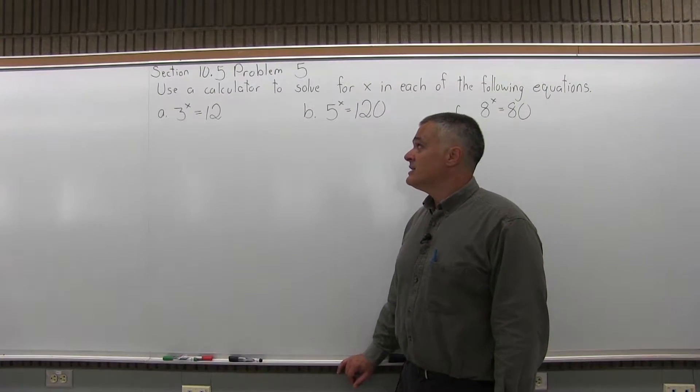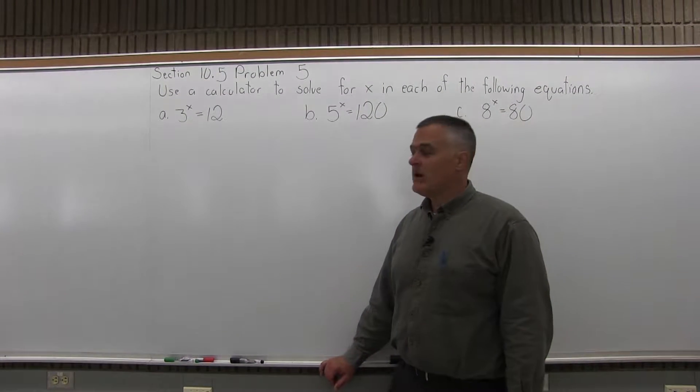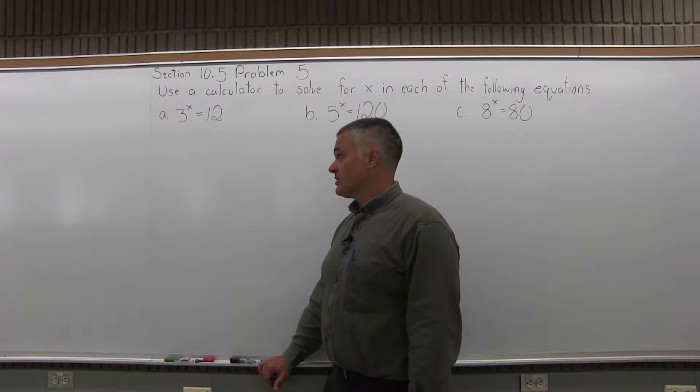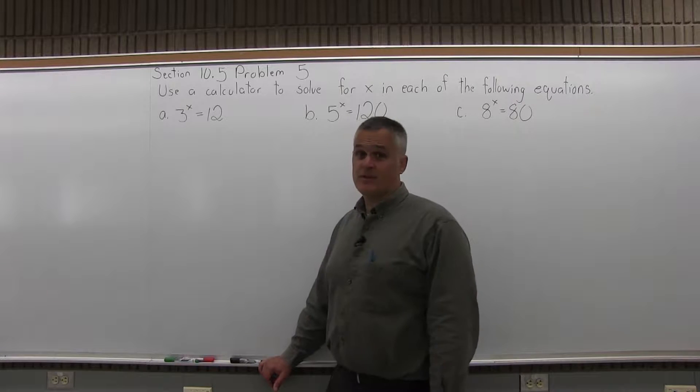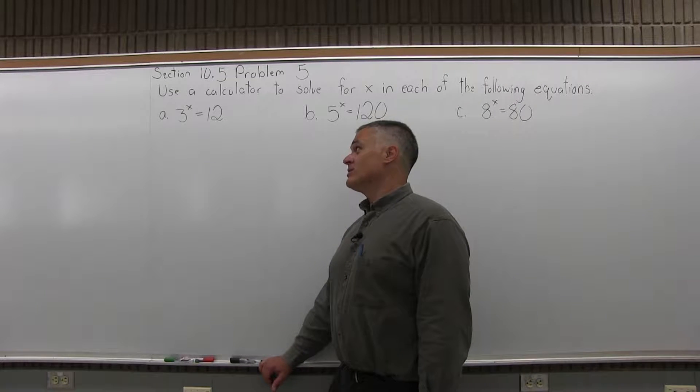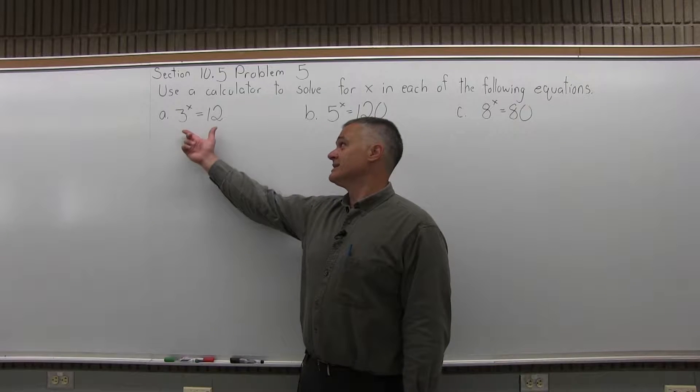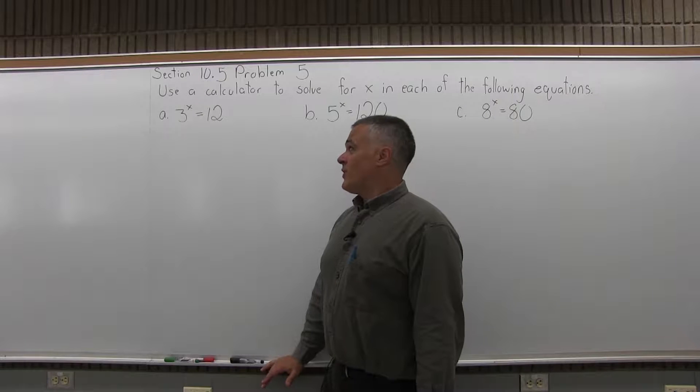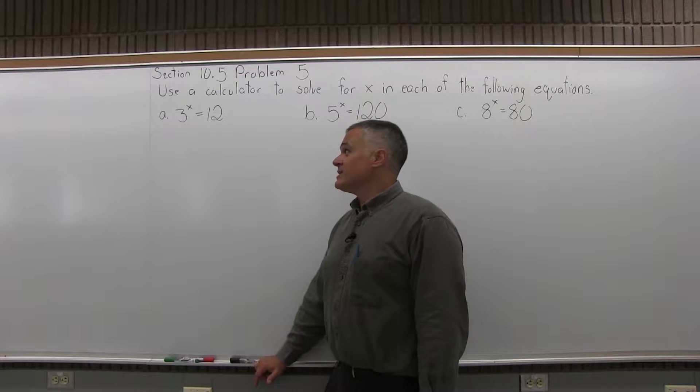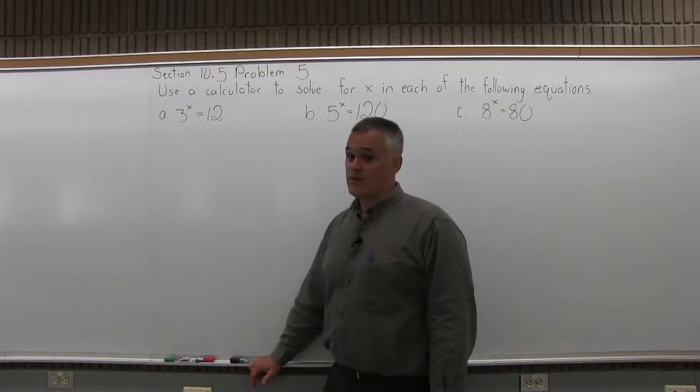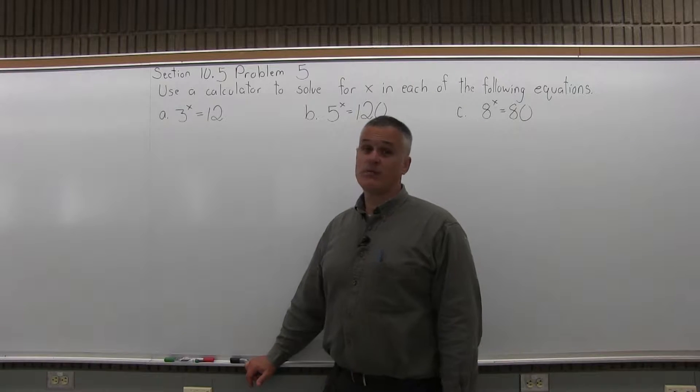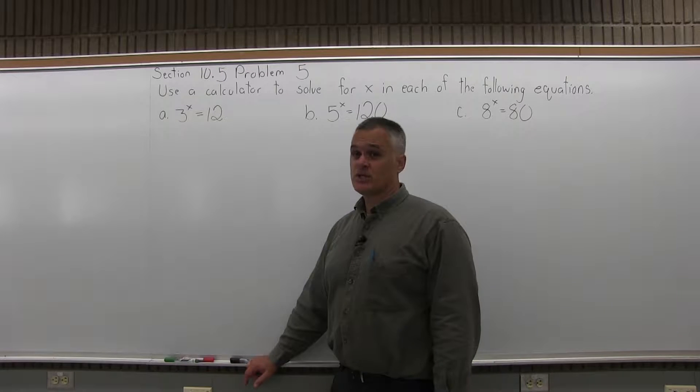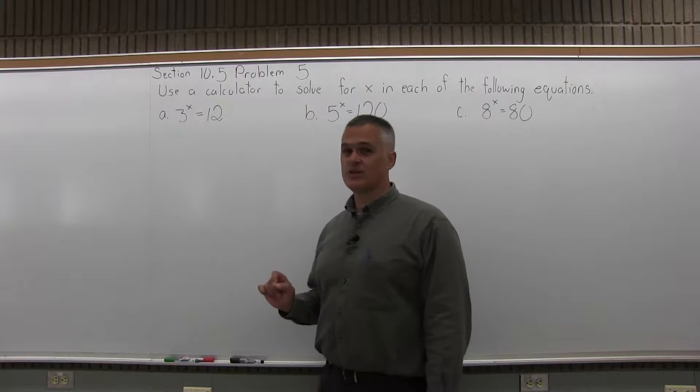The first one, Part A, is 3 to the x power equals 12. Now in the previous section there was a three-step process to solve for x in an exponential equation. And step one is make the base the same in both sides. There is nothing you're going to do to make the base the same in both sides of this equation 3 to the x equals 12. And your first reaction might be 4, x is 4. That's not the case. 3 times 4 is 12. 3 to the 4th power is not 12. 3 to the 4th power is 81. So there's some value of x that makes this equation true. 3 raised to that exponent is going to give you a result of 12.